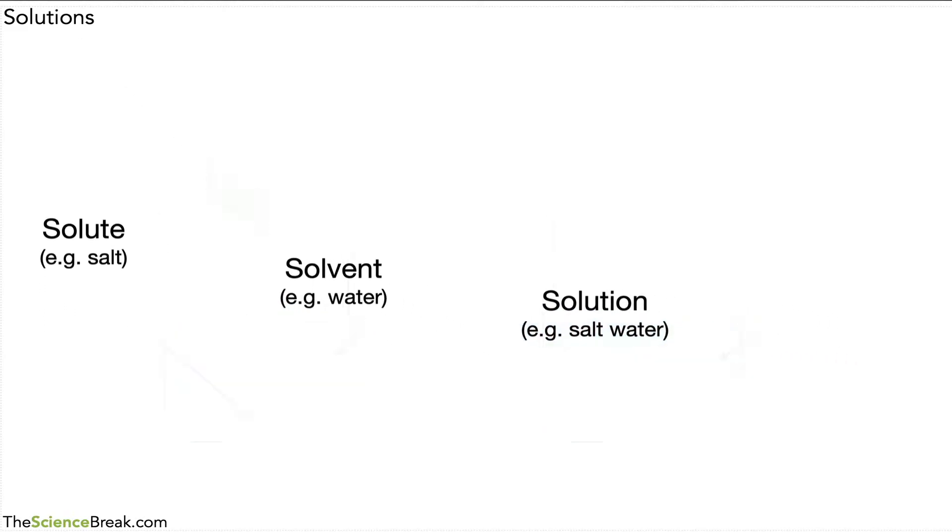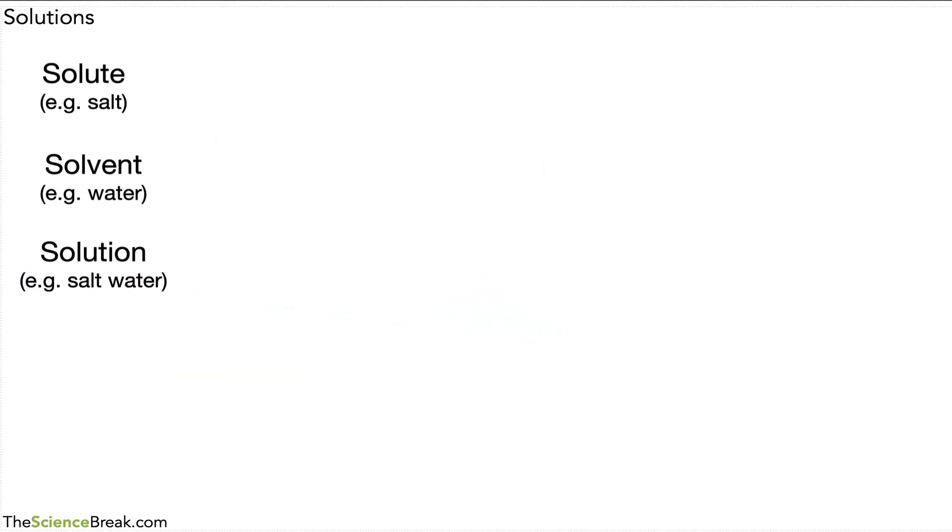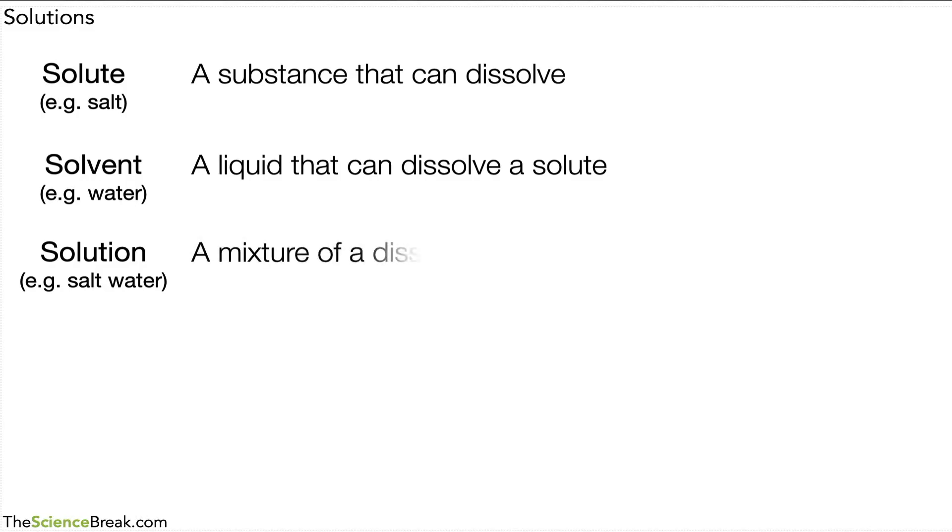We need to be able to explain what they mean and understand them. Firstly, the solute is a substance that can dissolve in a solvent. In our example, we had salt. The solvent is the liquid that can dissolve a solute. Our solute was salt, and the solvent was water. When we mix those two together and give it a stir, we have a mixture of the dissolved solute in the solvent, and that is our solution.